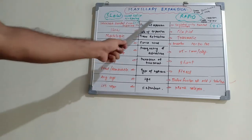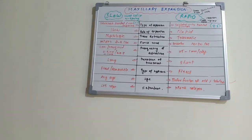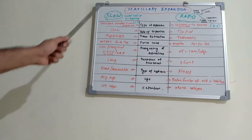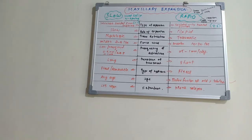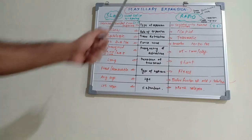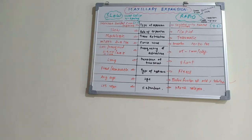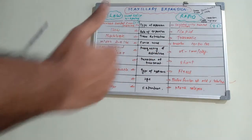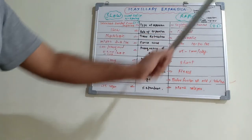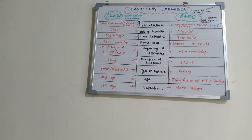The first parameter is the type of expansion. In slow expansion, both skeletal and dental expansion occur from the beginning in a 1:1 ratio. Whereas in rapid maxillary expansion, it is mostly skeletal at the beginning, with dental coming later — approximately an 8:2 ratio, meaning mostly skeletal expansion is happening.